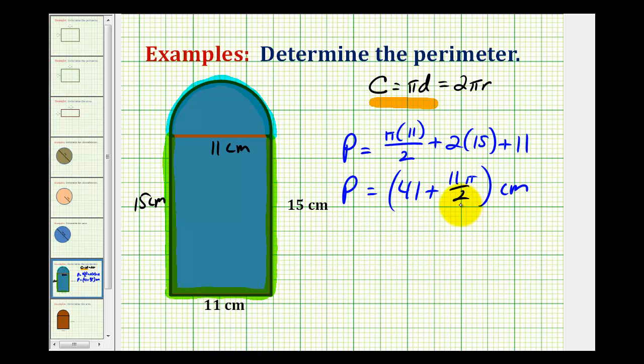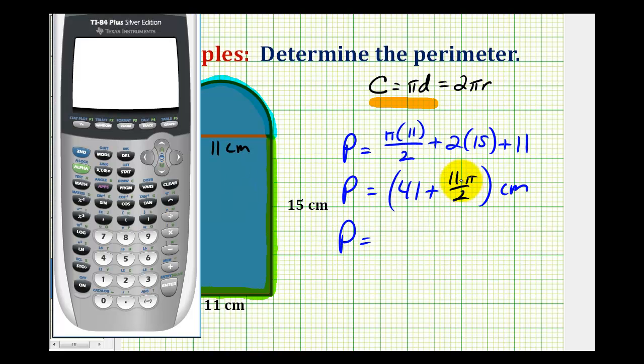Now let's go ahead and use the calculator to get a decimal approximation for this. One thing we should be aware of is that sometimes specific problems tell us to use a certain value for pi. A lot of times we're asked to use 3.14 for pi, but this calculator has a pi key, which will give us a more accurate calculation.